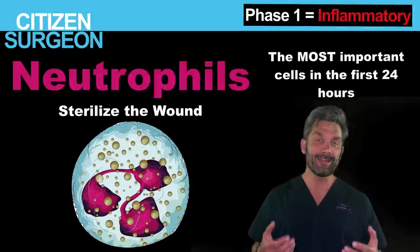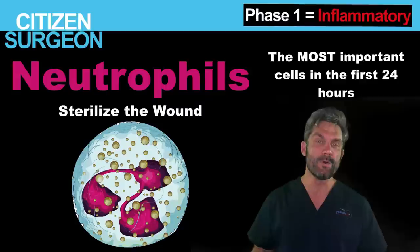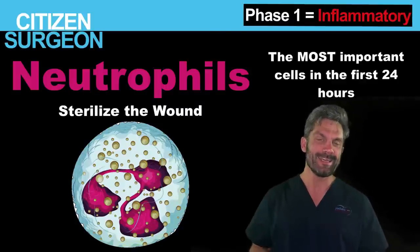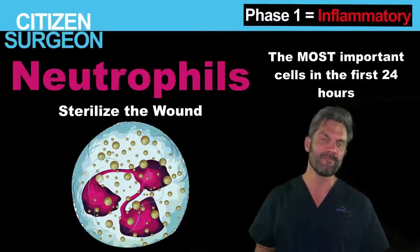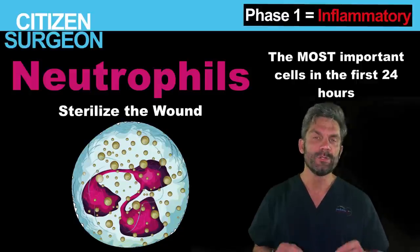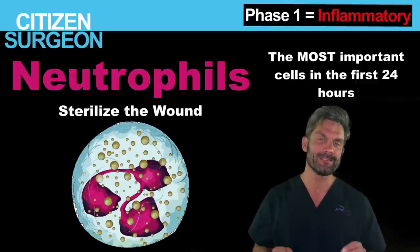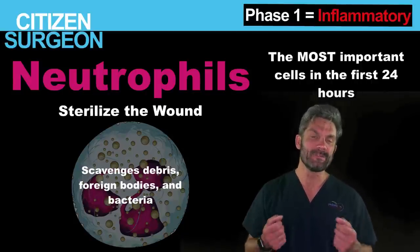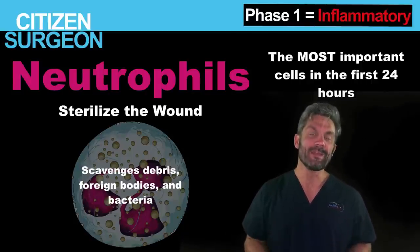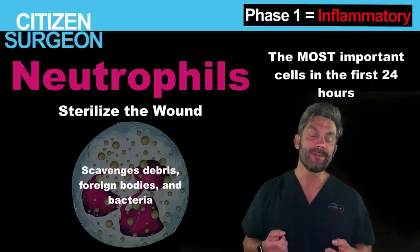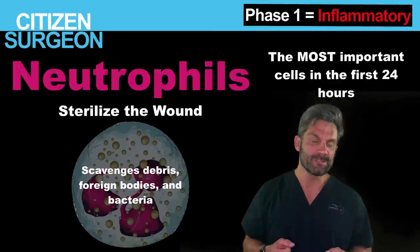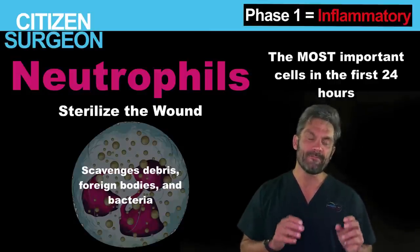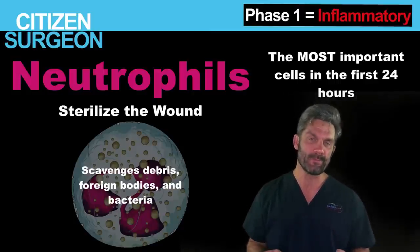Neutrophils — you've got to love them. This is the most important cell in the first 24 hours of a wound. Neutrophils are responsible for sterilizing the wound. They are scavengers — they get rid of debris, bacteria, and even foreign bodies. They're really important in that first 24 hours for cleaning up the wound.